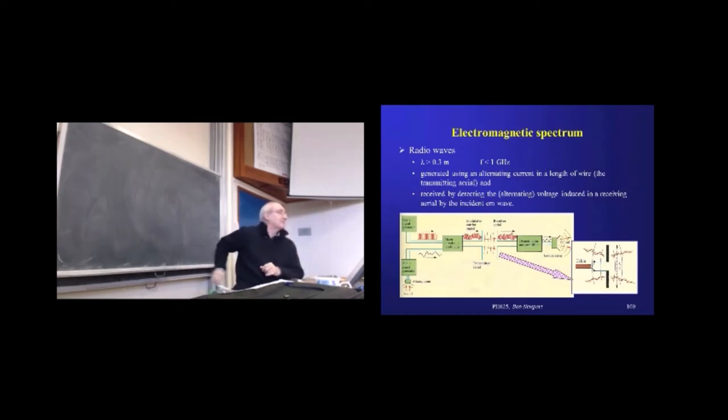A student asks about the switch from terrestrial to digital transmission and what the difference is between a digital wave and a normal wave. The lecturer explains the difference is fundamental: you're no longer trying to measure amplitudes and frequencies, just on or off - really a zero and one transmission, which is why it's not as subject to interference.